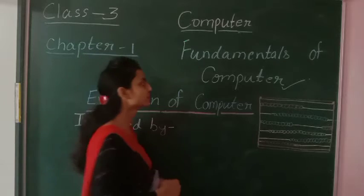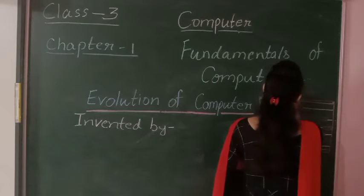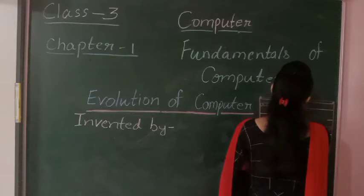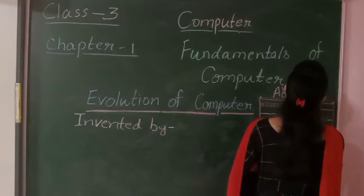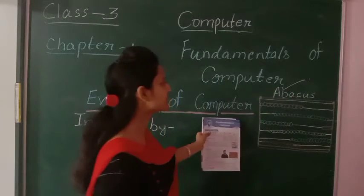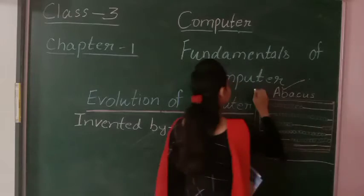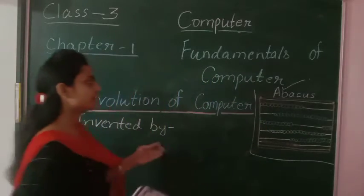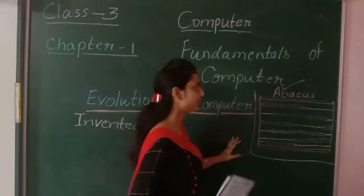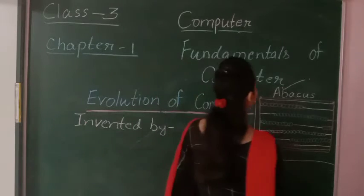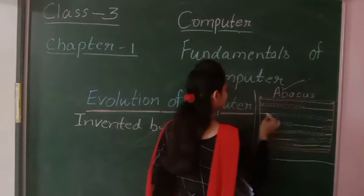Today, we will go through the Abacus — the first calculating device. What was Abacus? The first calculating device is the Abacus. You may see the picture here, I have drawn it. This is your Abacus. Abacus was the first calculating device, which means you can calculate — add or subtract — using this device.